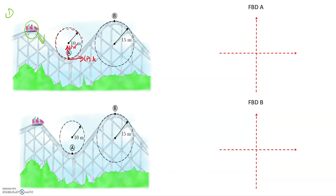We start by drawing the weight force, pointing downwards. We'll call this cart M, so you can label it MG for weight force or just W. Then the normal force — the force applied to the cart by the track — is pointing upwards. But is it the same magnitude as the weight force? For that we need to think about the acceleration. The cart can be described as undergoing uniform circular motion.